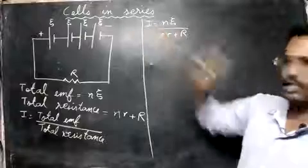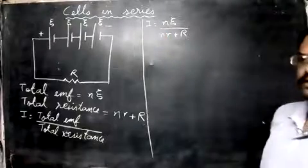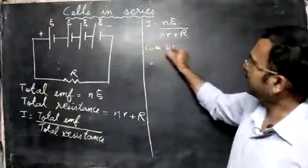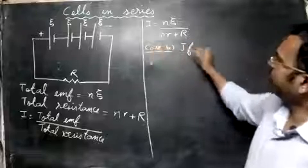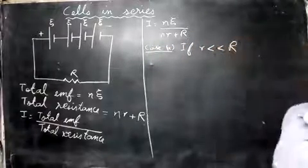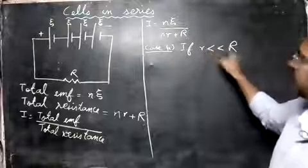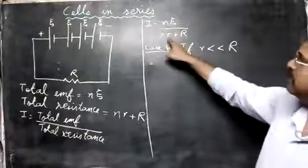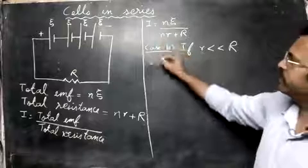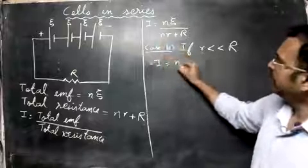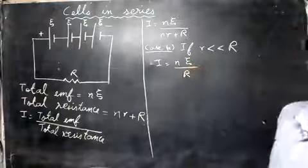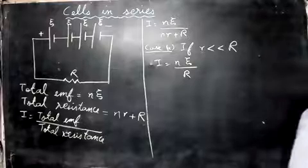Now let's look at Case A: if the internal resistance is very much smaller than the external resistance. Since n·r is very small, that term vanishes, and the formula simplifies to I equals n·ε divided by R.